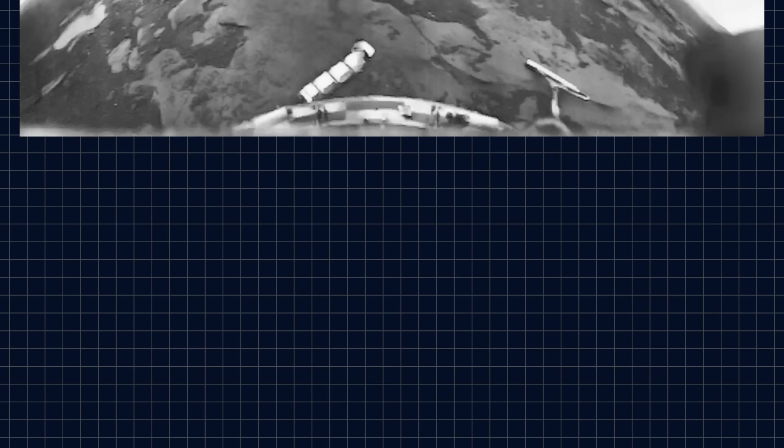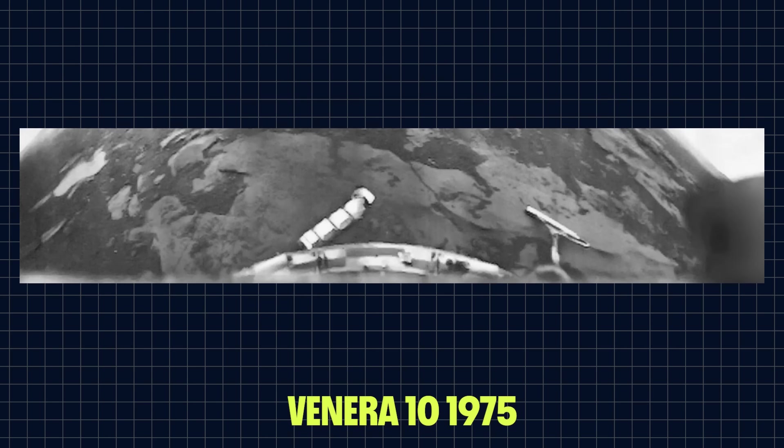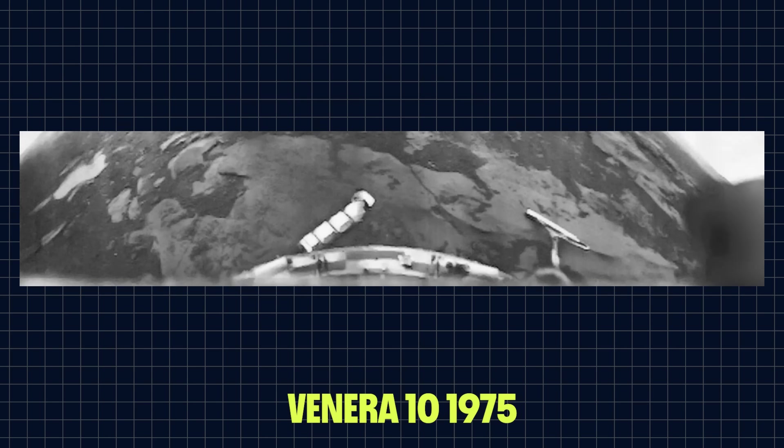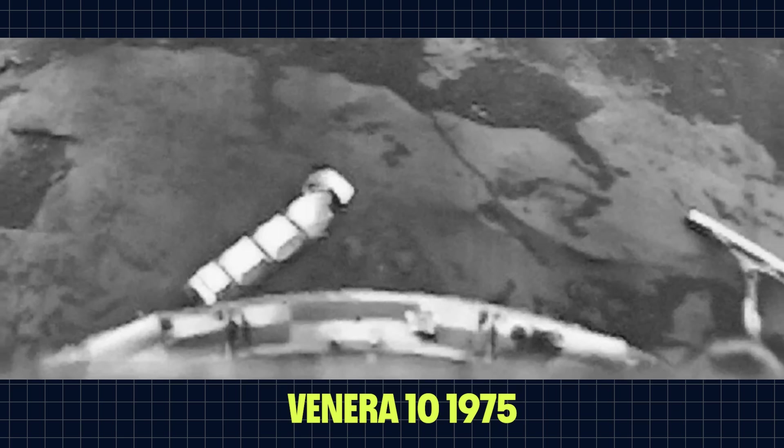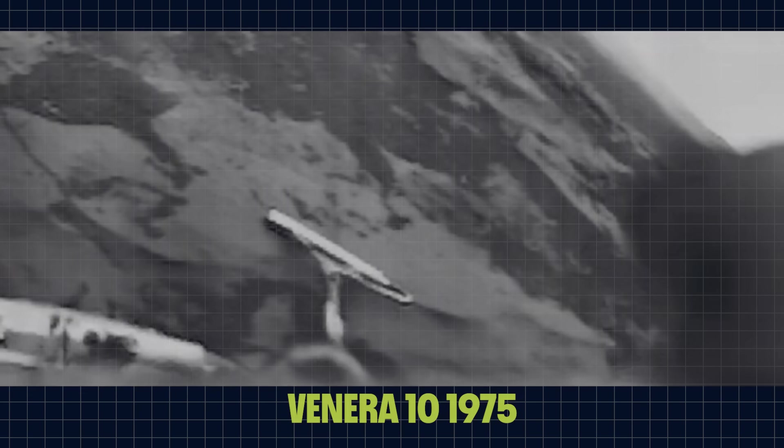And this is the view from Venera 10, an identical lander that arrived just a few days later. Now we are seeing flat ground with hardly any of those chunks of rock, just the smooth top of what was probably once an ancient lava flow.